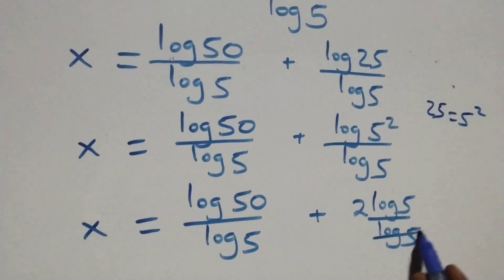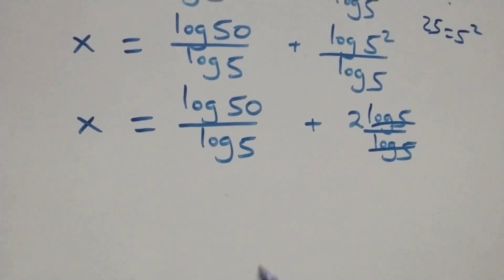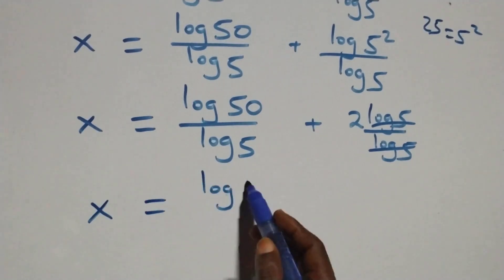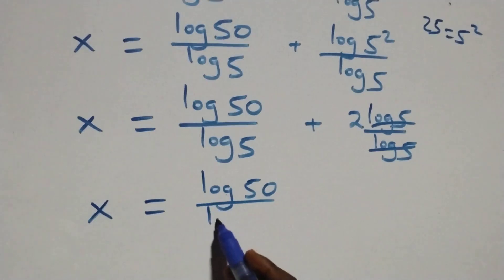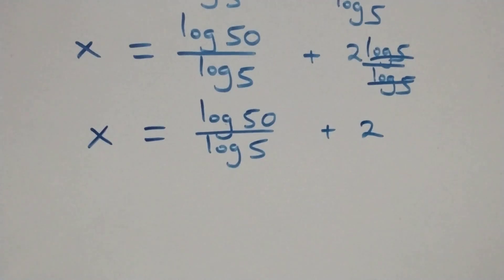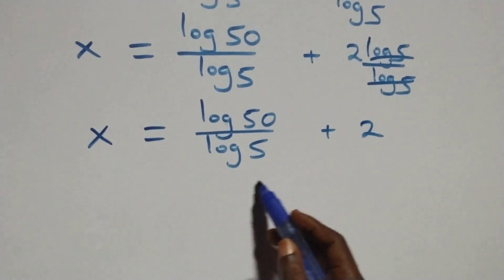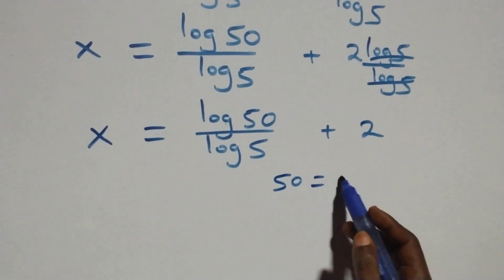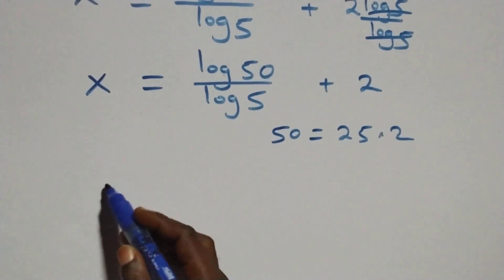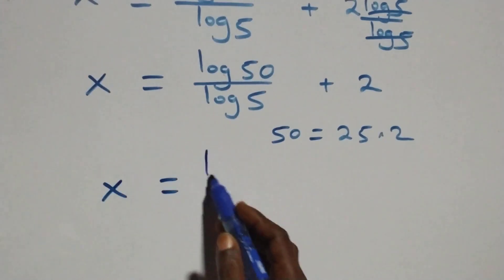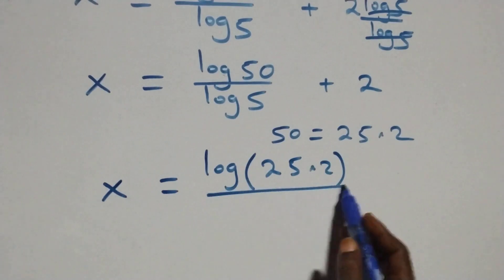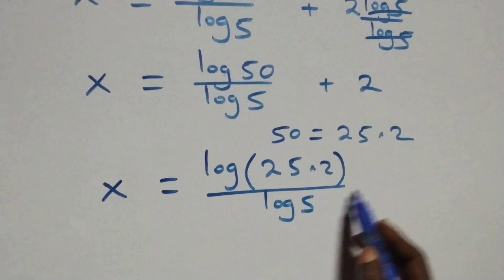Here log 5 cancels each other, and what we have becomes x equals to log 50 over log 5 plus 2. We can also express 50 as 25 times 2, so x equals to log of 25 times 2 over log 5 plus 2.